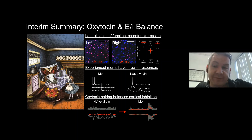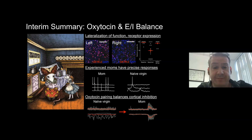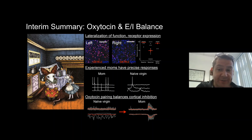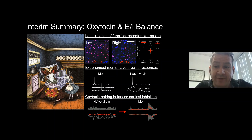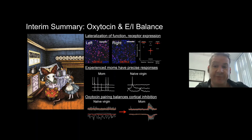To summarize the first two-thirds of the talk: we've been looking at an unusual left lateralization for maternal responses to pup vocalizations at multiple levels. Left auditory cortex has more cells expressing oxytocin receptors. Left auditory cortex is required for responding to pup call sounds. Responses to pup calls are much more robust and reliable in the mother's left auditory cortex compared to virgins, right auditory cortex, or males. And we've been looking at the cellular and synaptic action of oxytocin — how it might enable plasticity and help convert less reliable virgin responses to more reliable maternal responses.